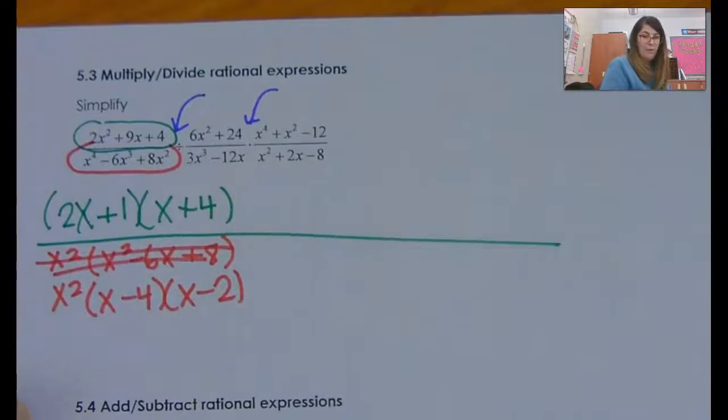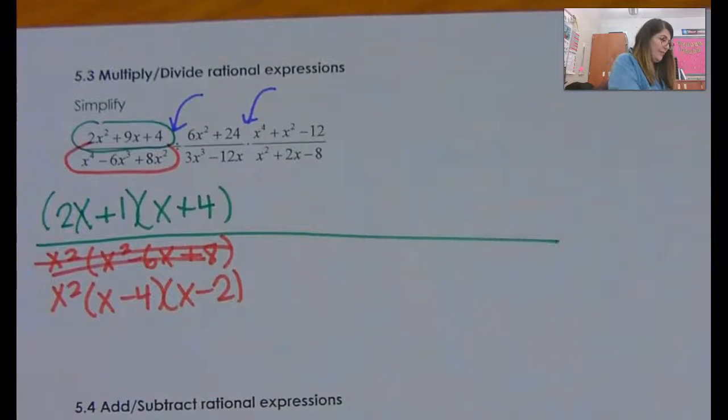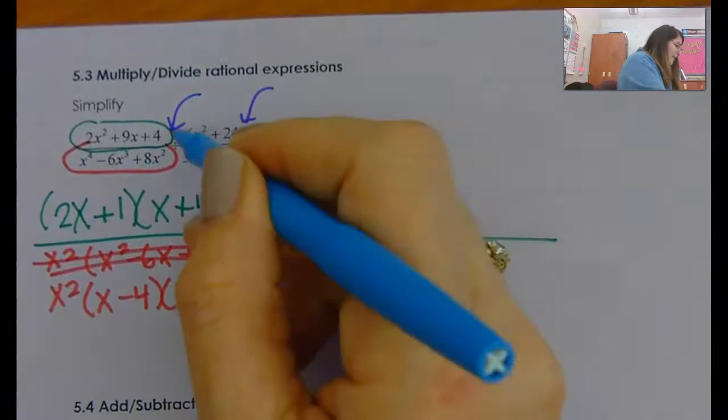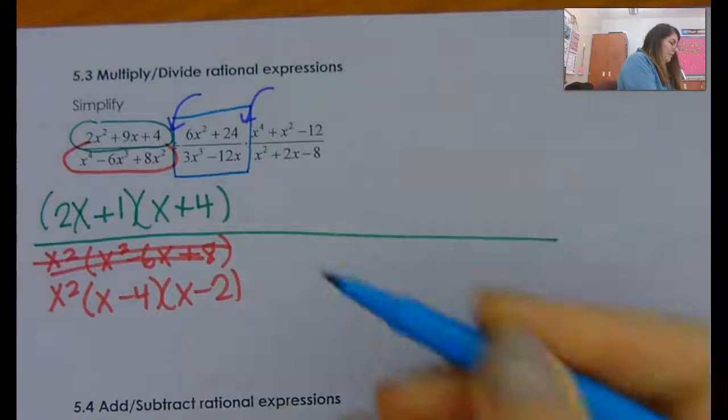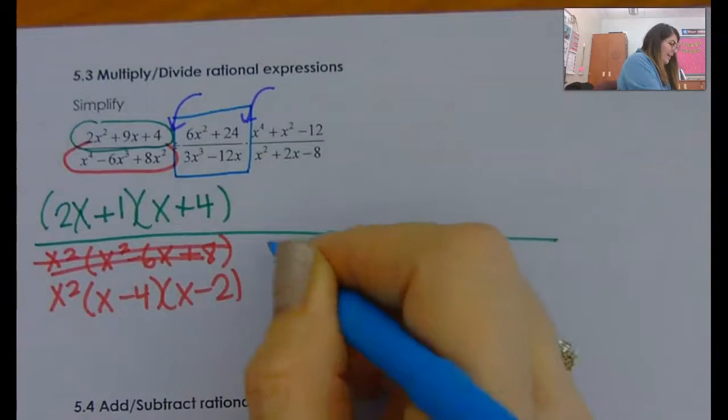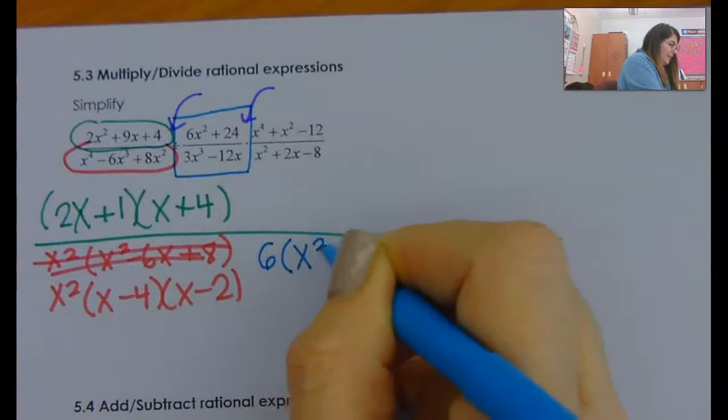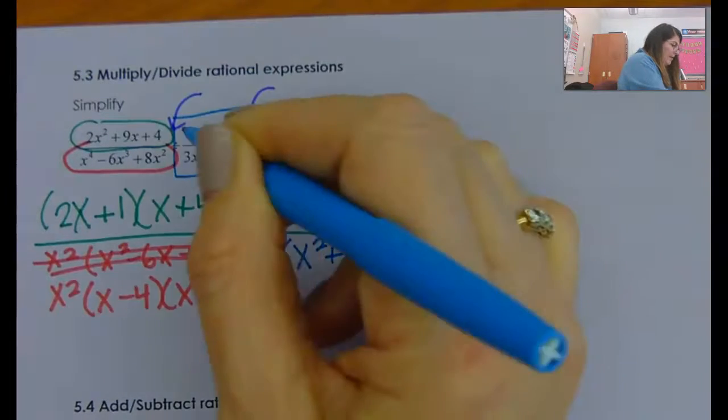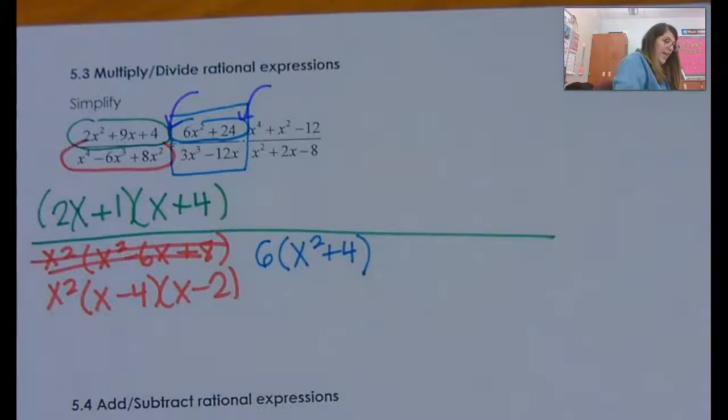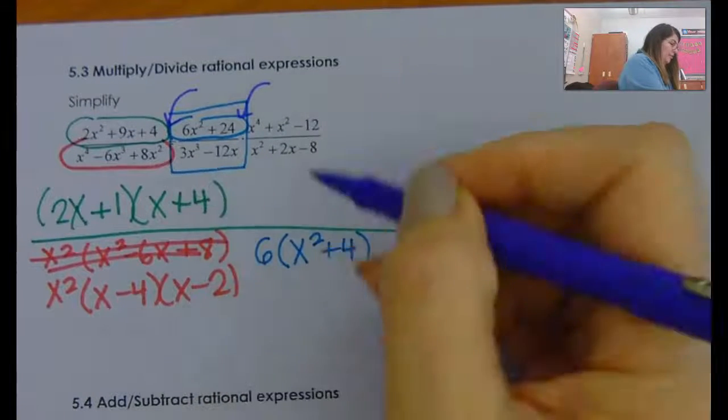Now, this is a division problem, so I'm going to flip it around. So this goes in the denominator: 6 times x squared plus 4, that is this part here. And then your denominator comes to your numerator.